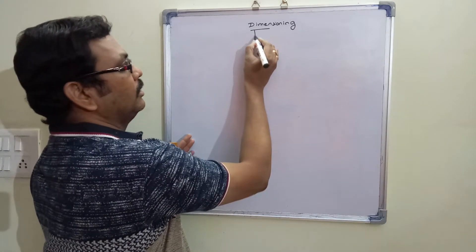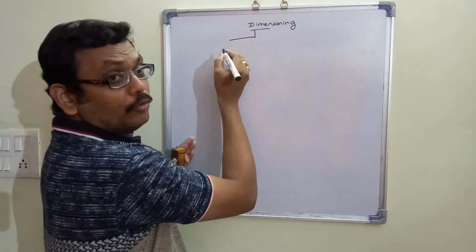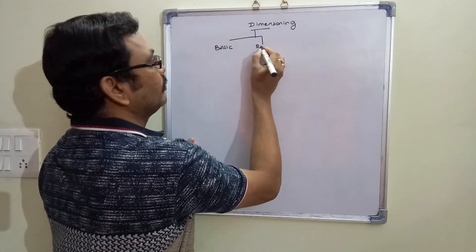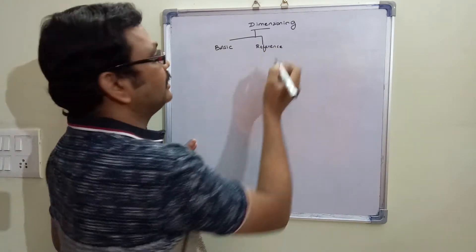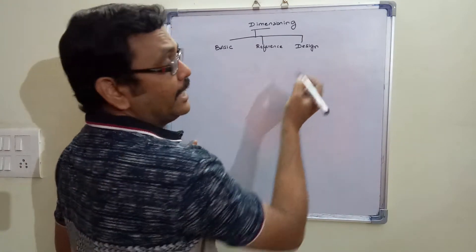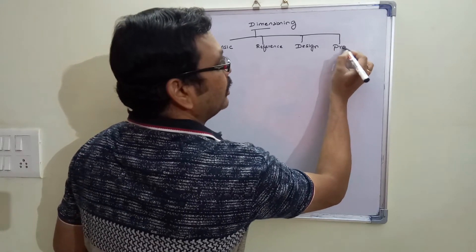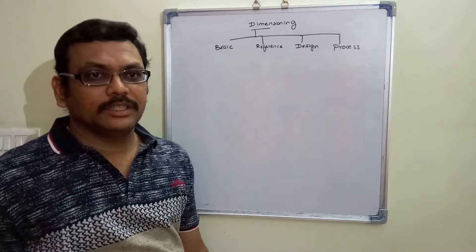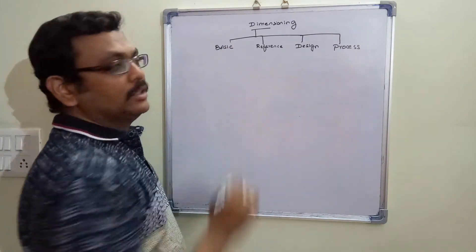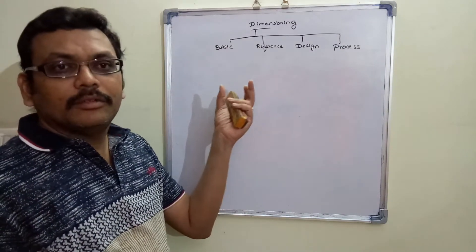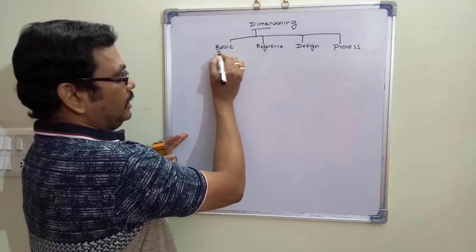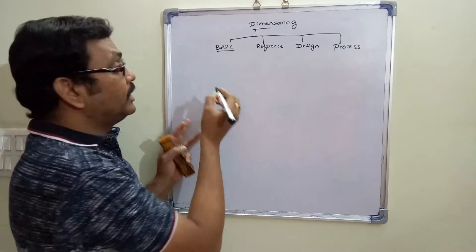There are different types of dimensions: basic dimension, reference dimension, design dimension, and process dimension. These are the main classifications of dimension.